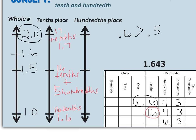Now we will place our number on the vertical number line using the tenths place. What we have is sixteen tenths and four hundredths. Looking at our vertical number line, sixteen tenths plus four hundredths falls before sixteen tenths plus five hundredths. This shows that sixteen tenths plus four hundredths is equivalent to one and sixty-four hundredths. Since that does not meet the halfway point, our number rounds to our minimum value of one and six tenths.